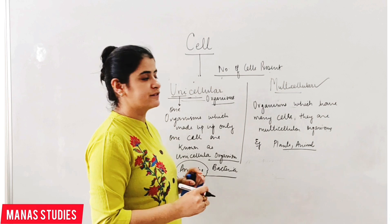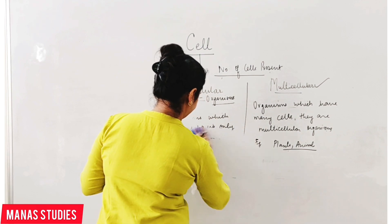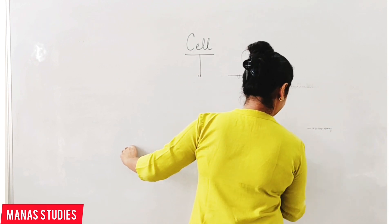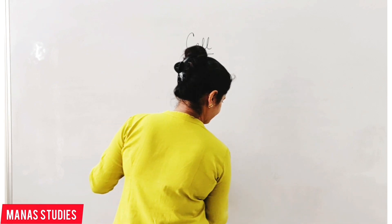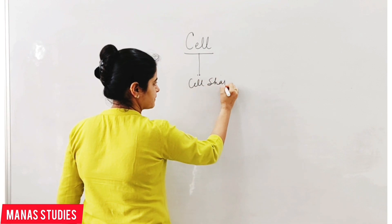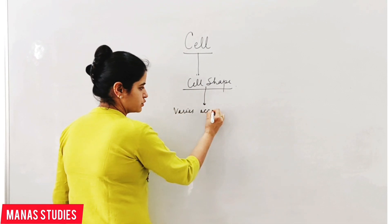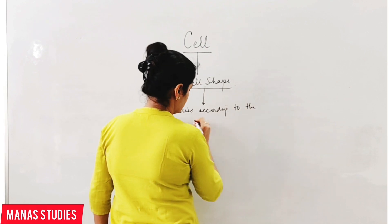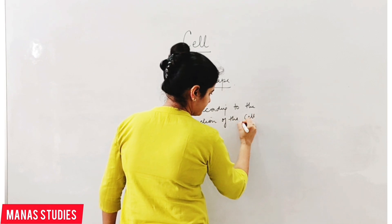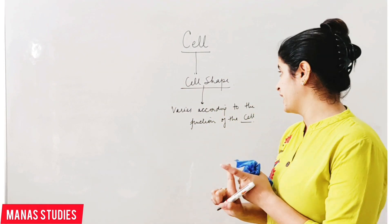Next we will discuss different shapes of cells. Cell shape varies according to the function of the cell. So the shape of a cell basically depends upon the function that cell performs.